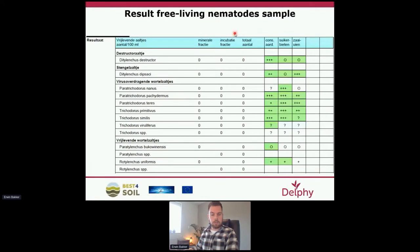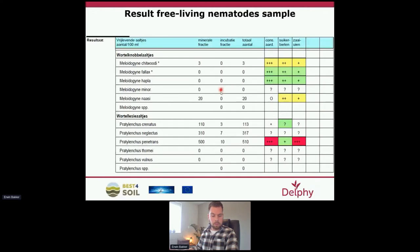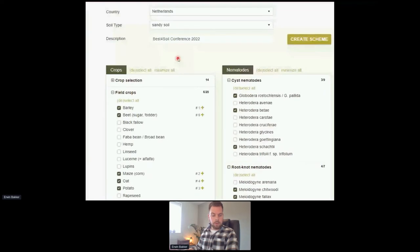Due to the underdeveloped areas on many fields, I advised the grower to take free-living nematode samples to obtain insight into the different types of nematodes and their counts. Here you can see the different types of nematodes and their counts. For some types nothing was found in the sample, but for some root lesion nematodes higher numbers were found — specifically Pratylenchus crenatus, Pratylenchus neglectus, and Pratylenchus penetrans.